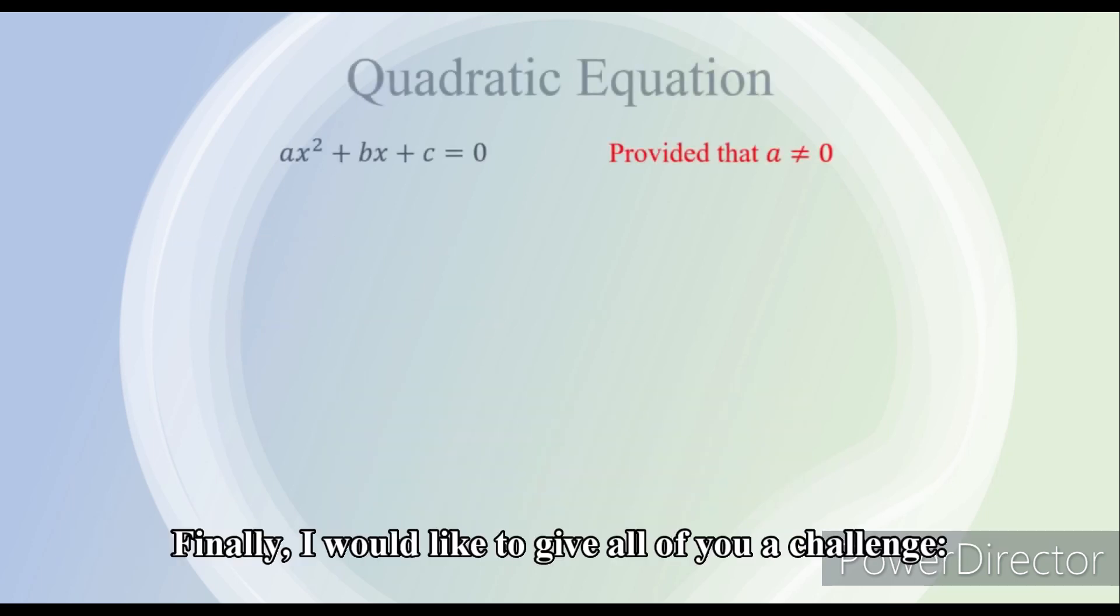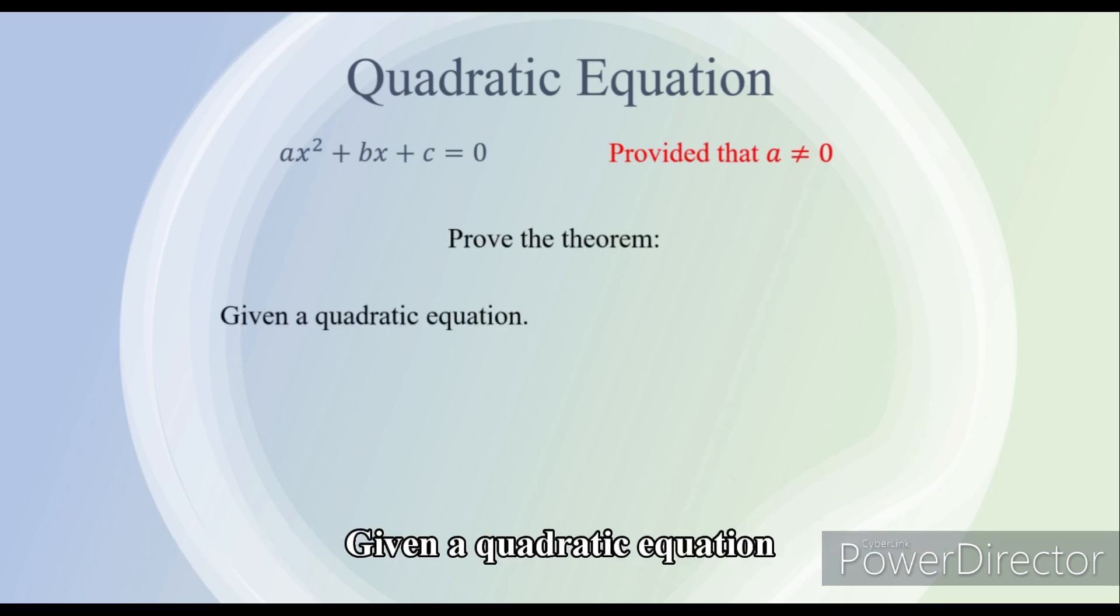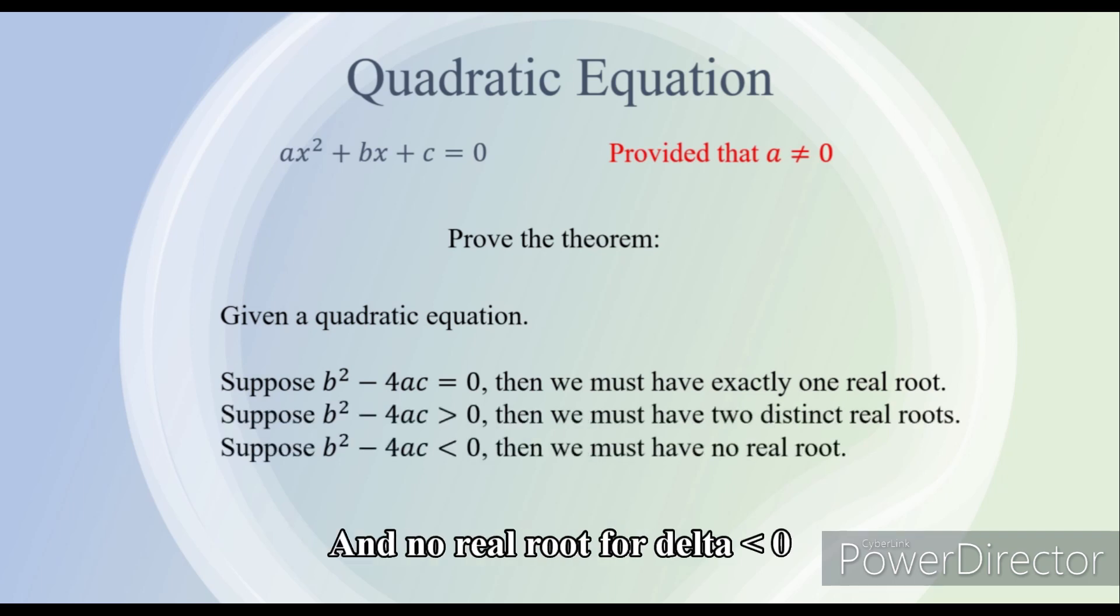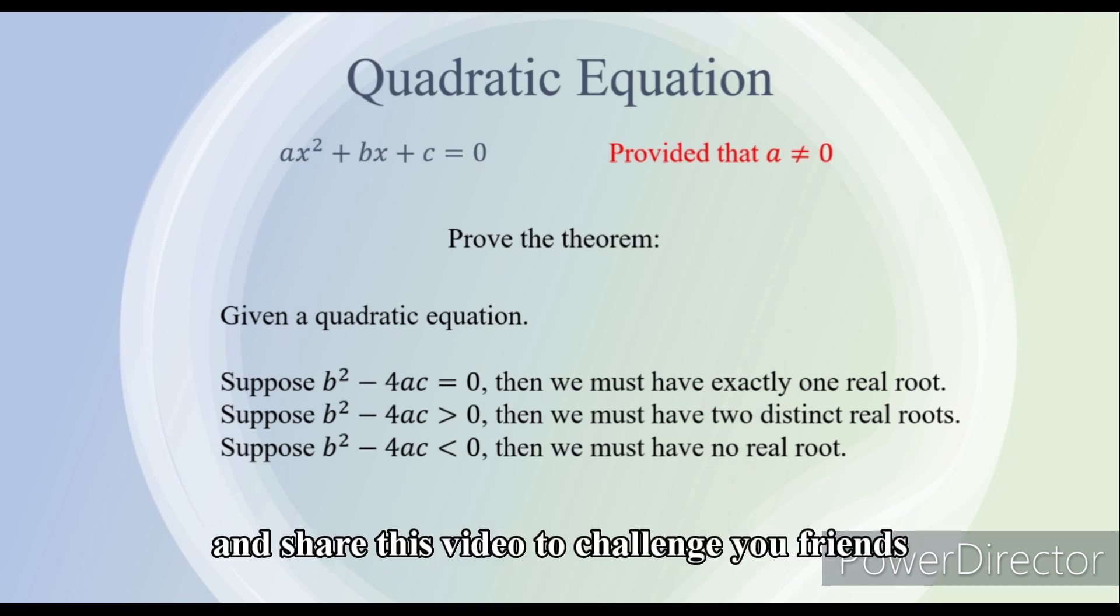Finally, I would like to give all of you a challenge. Given a quadratic equation, if delta equals to zero, we must have one real root. If delta greater than zero, we have two real roots, and no real root for delta less than zero. I believe you have recited this theorem for many years. Can you prove it? Comment below if you know the answer and share this video to challenge your friends.